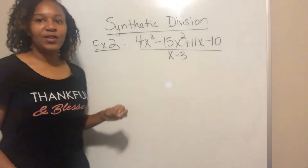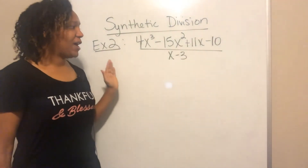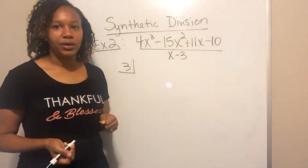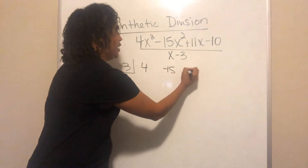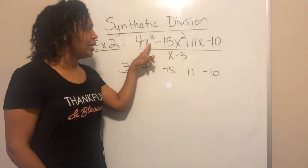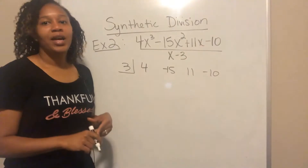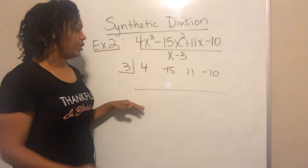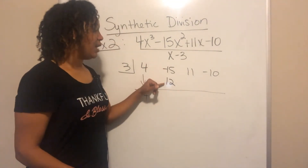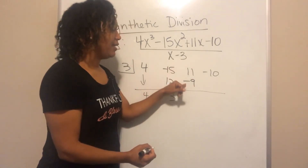Example 2: divide 4x³ minus 15x² plus 11x minus 10 by x minus 3. My k is positive 3 — the opposite of the sign. Coefficients are 4, negative 15, 11, and negative 10. The highest exponent is 3, so I should have 4 coefficients — and I do. Draw the line, drop 4 down, multiply: 3 times 4 is 12. Negative 15 plus 12 is negative 3. 3 times negative 3 is negative 9. 11 minus 9 is 2.